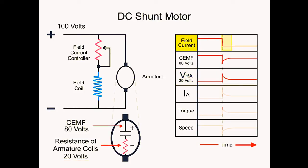When the field current is reduced, the CEMF drops to 50 volts, and the drop across the resistance of the armature coils VRA increases to 50 volts.